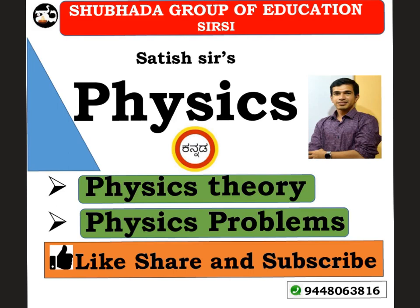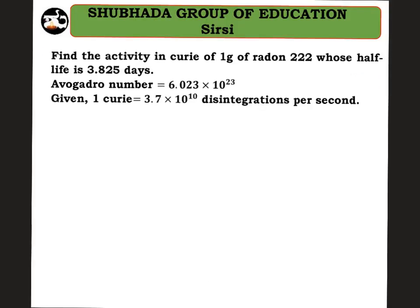Hi guys, welcome to our channel Shubhada Group of Education, Sirsi. You are watching Satish's Physics Videos. Look at the first problem on nuclei. Find the activity in curie of one gram of radon-222 whose half-life is 3.825 days. Avogadro's number is given as 6.023×10²³, and one curie is given as 3.7×10¹⁰ disintegrations per second. This is the type of question you can expect for five marks.